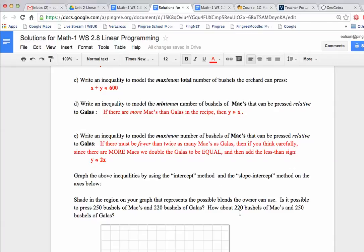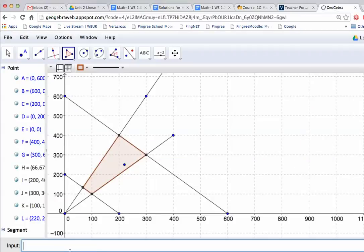Let's see what the last one is. How about the other way around, 220, let's see, 250 Galas and 220 Macs. So reverse those digits. And if I do that, 250 comma 220, and that one is just outside. So you can see, this is an easy way of determining what blends I'm allowed to produce within my constraints. There you go.